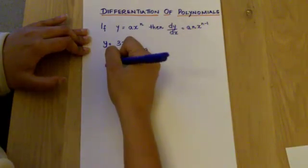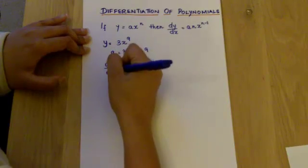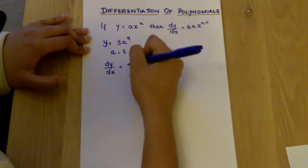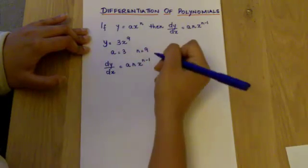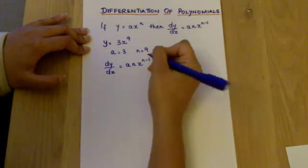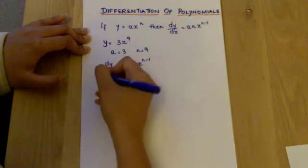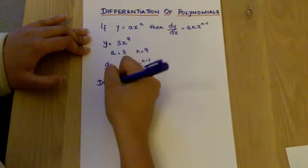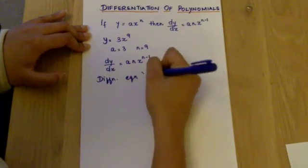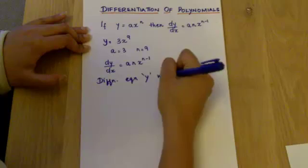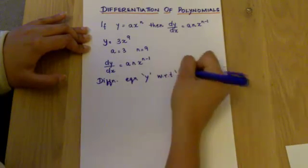Now, substituting in the formula dy over dx is equal to an times x to the power of n minus 1. dy over dx means differentiating equation y with respect to x.